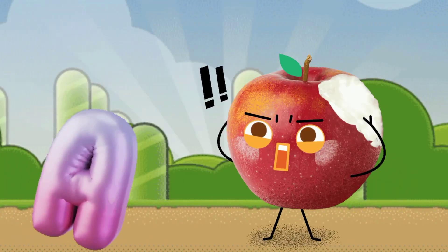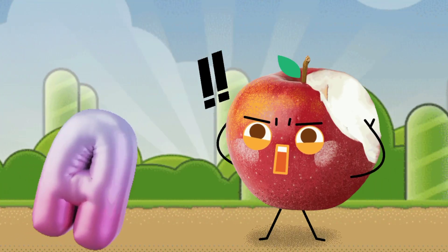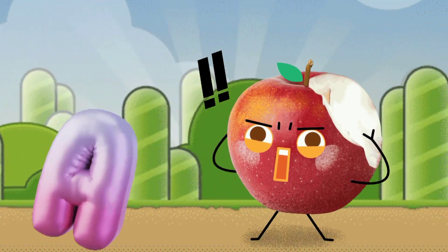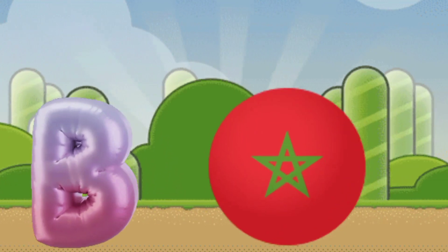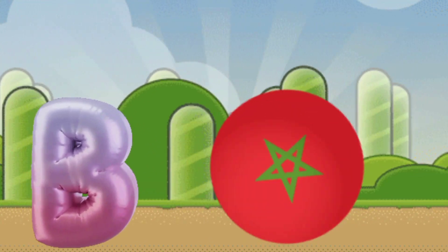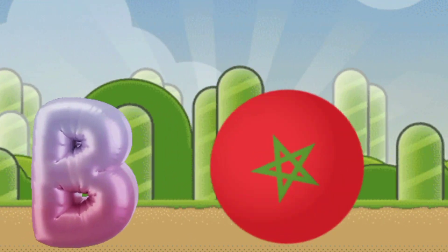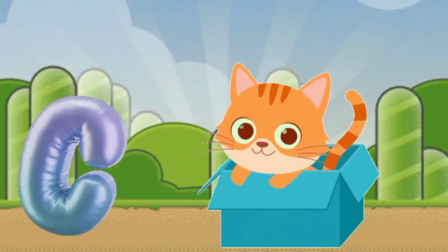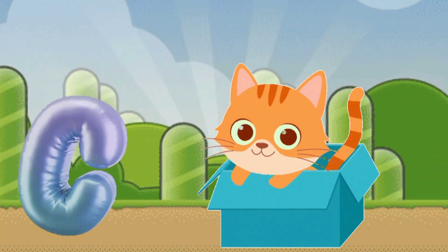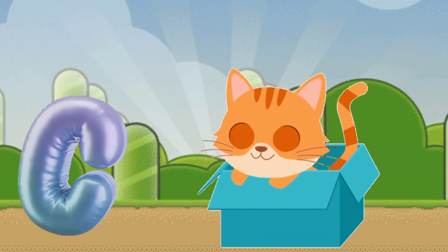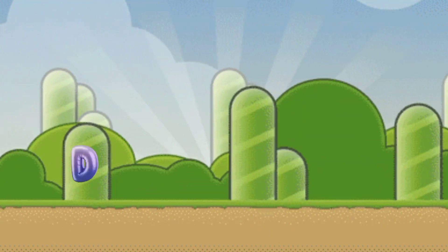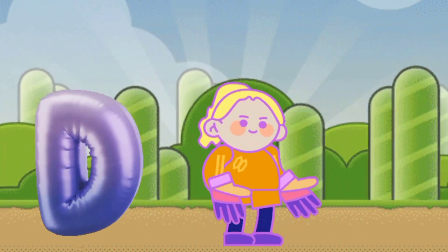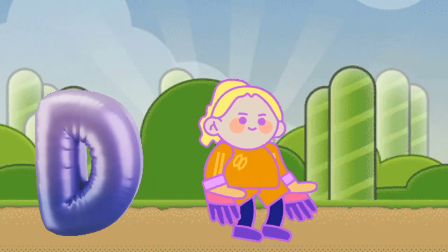A is for apple, a-a-apple. B is for ball, b-b-ball. C is for cat, c-c-cat. D is for doll, d-d-doll.